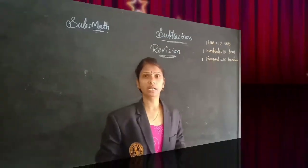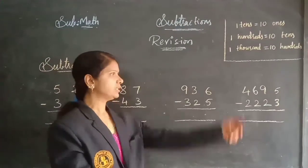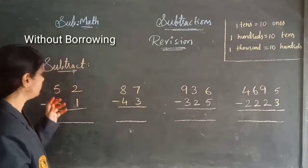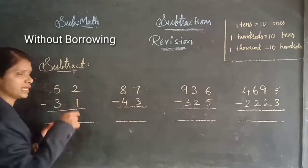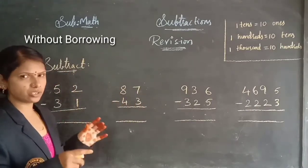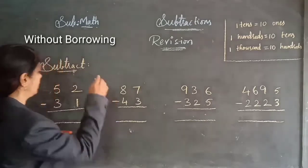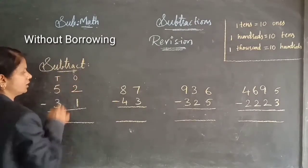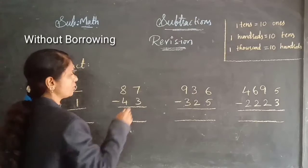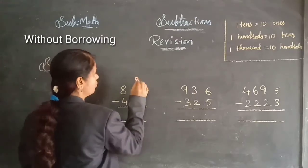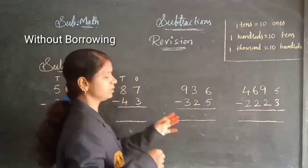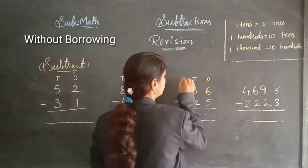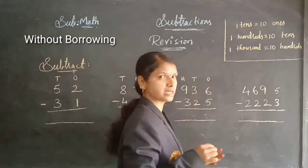Now, let's do the subtraction children. I will look at these problems here. First I arrange the place values for the given numbers. Ones, tens — coming to this problem. Ones, tens — coming to this problem. Ones, tens, hundreds — three places are given. Coming to this problem: ones, tens, hundreds.